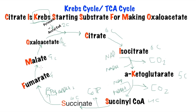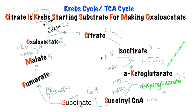We don't get anything from fumarate to malate, but from malate to oxaloacetate we get 1 NADH — NAD converted to NADH. The two enzymes of much more importance are isocitrate dehydrogenase, which removes 1 hydrogen from isocitrate, and alpha-ketoglutarate dehydrogenase, which removes 1 hydrogen from alpha-ketoglutarate.